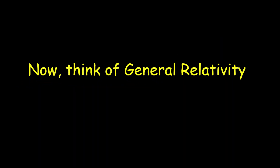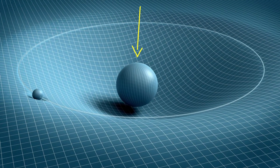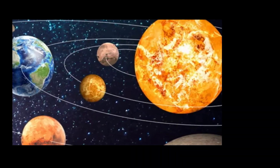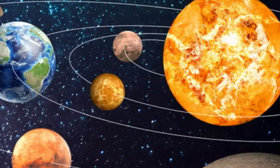Now, think of general relativity. Imagine space as a stretchy fabric. When you place a heavy ball on this fabric, it creates a dip. If you roll a smaller ball near the dip, it will move towards the larger ball — not because of a direct pull, but because of the curved path created by the dip. This is how massive objects like stars and planets curve space-time around them, and this curvature guides the movement of other objects.